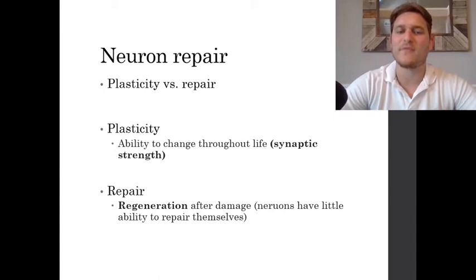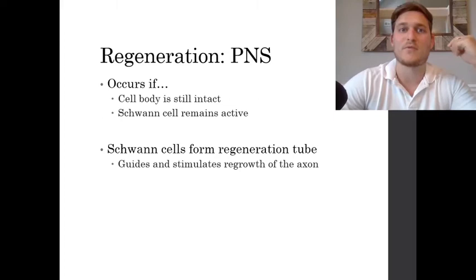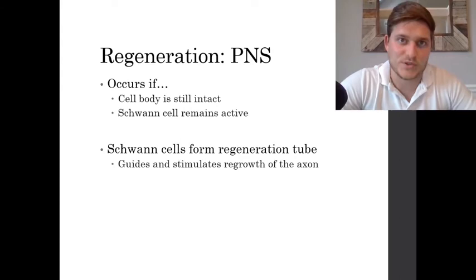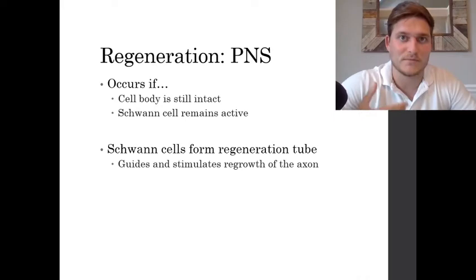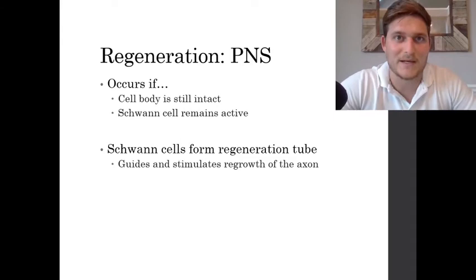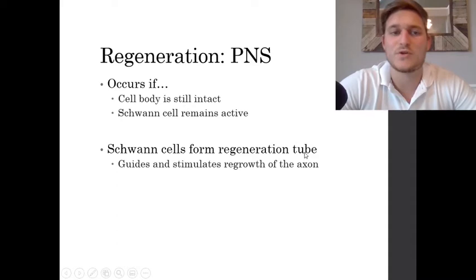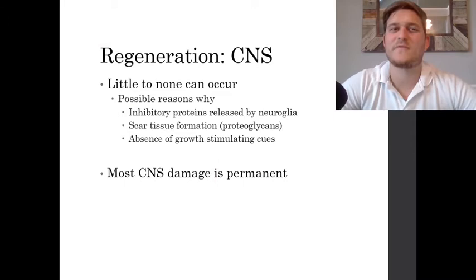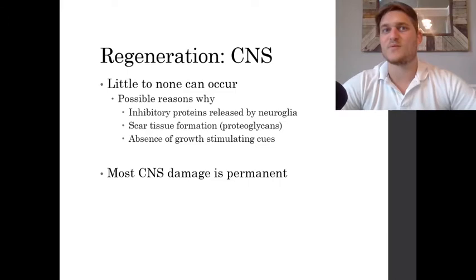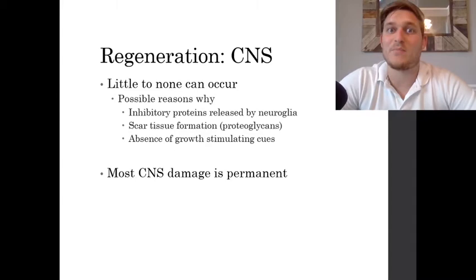Certain neurons can also repair — regeneration occurs once a neuron is damaged. However, the peripheral nervous system is really where most of this regeneration can occur. In order for that to happen, the cell body containing the nucleus has to be intact, and the Schwann cell also has to remain active. Not only does the Schwann cell help form myelination, but it also helps in regeneration of a neuron's axon — it can form what's called a regeneration tube, which helps in the regrowth process of that axon. In the central nervous system, little to no regeneration actually occurs, which is why damage to the brain or spinal cord can be permanent.